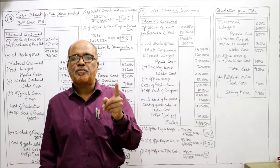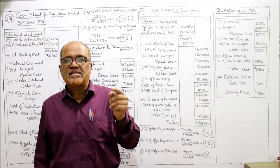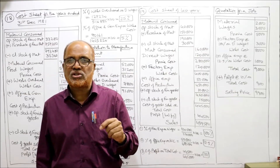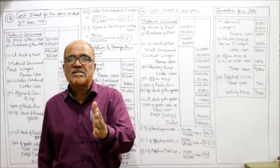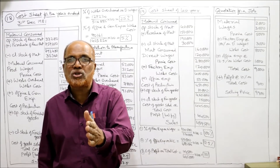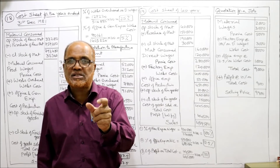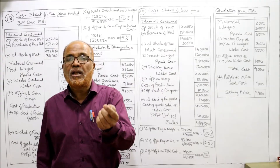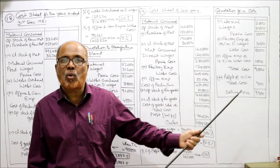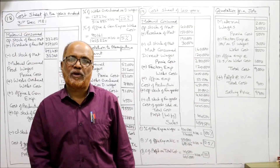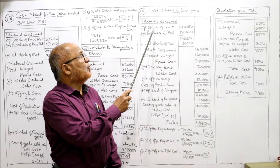The first percentage: percentage of works overhead on direct wages. Percentage of administration overhead on works cost — these two are as usual. Third percentage: percentage of profit on total cost. We find out last year's percentage of profit on total cost, and that same percentage of profit we apply in the quotation. That is the new point.